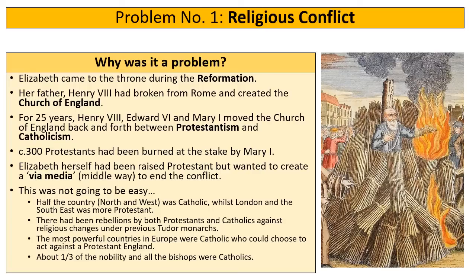Half the country is Catholic, mainly the North and the West — areas further away from London where ideas of Protestantism haven't quite spread — whereas closer to London and the South East, people were more likely to be Protestant. If Elizabeth gets her religious settlement wrong, she's in danger of rebellion. Henry, Edward and Mary had all faced rebellions based on religion. Furthermore, the most powerful countries in Europe were Catholic, and if Elizabeth persecutes Catholics or goes very strongly Protestant, she may face repercussions from those European countries.